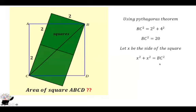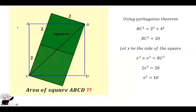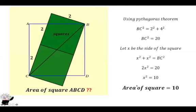So we can put 20 here. We get x² + x² = 2x², which is equal to 20. We divide both sides by 2 and we get x² = 10. The area of a square is length times length; the length is x, so the area is x² = 10. The area of the square is 10, and that is the answer.